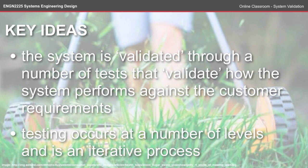This brings us to the end of the online classroom for the system validation topic. The two key ideas are: first, the system is validated through a number of tests that validate how the system performs against the customer requirements, going through each attribute and making sure the system performs against those requirements. Second, and probably more importantly, testing occurs at a number of levels and it is an iterative process — just because you've got a proof of concept test doesn't necessarily mean your system is going to work when you combine all of the different subsystems. Check out the self-test on Waddle and the core reading available on the course website.